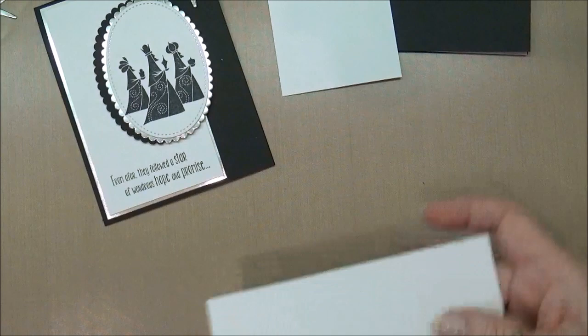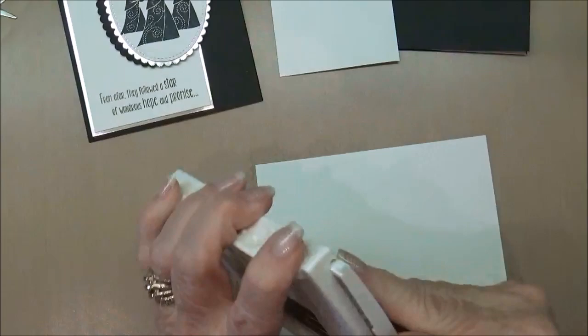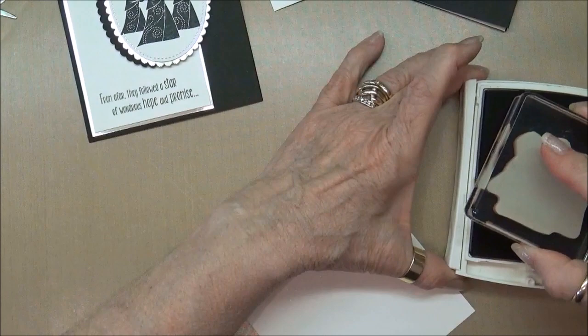And then I have another piece of shimmery white and what I'm going to do is I'm going to stamp the Wise Men on this using the basic black archival ink from Stampin' Up and get that stamped and then we can die cut that with the stitched shape oval. So let's get going.